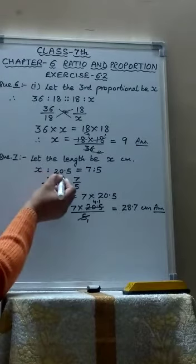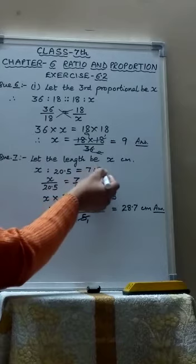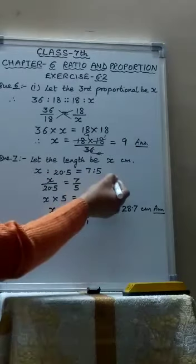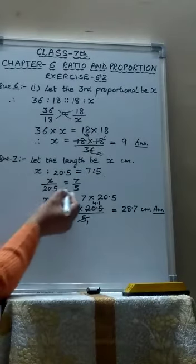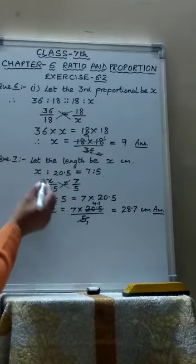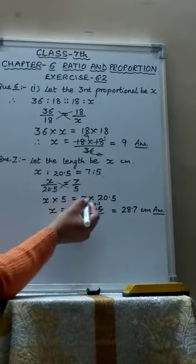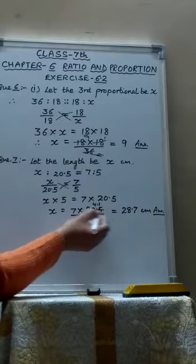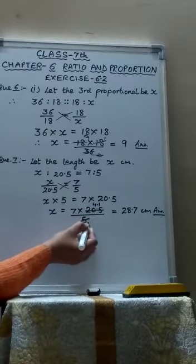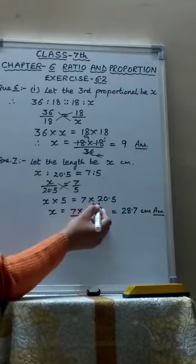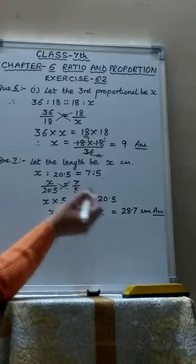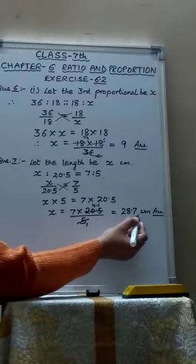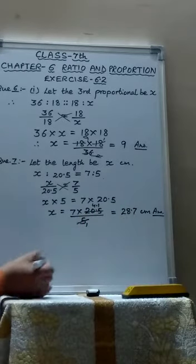So we will write x ratio 20.5 equals to 7 ratio 5. You cannot change the order. Order will remain the same. Length is to width equals to length is to width. That means x upon 20.5 equals to 7 upon 5. Same way cross multiply, x multiplied by 5 becomes 7 multiplied by 20.5. So x equals 7 multiplied by 20.5 divided by 5. I have cut this. 5 ends of 5 and 5, 4.1's are 20.5. So 7 multiplied by 4.1 becomes equals to 28.7 cm. So this is the required length of the rectangular sheet.